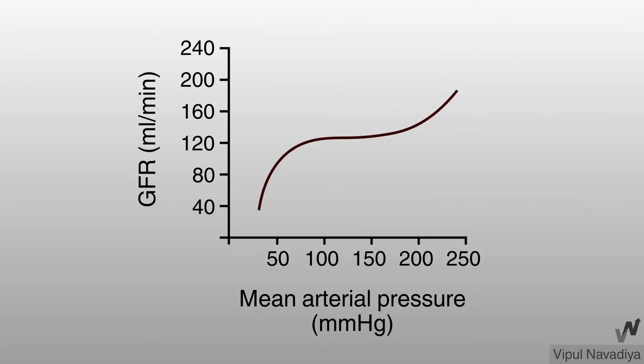You can see what autoregulation really is in this graph. Blood pressure is plotted on x-axis and GFR on y-axis. Normal mean arterial pressure is around 100 mmHg and GFR is 125 ml per minute. So this is the set-point in normal condition. Renal autoregulation operates in this range. See GFR is relatively unaltered with pressure ranging from 80 to 170 mmHg.